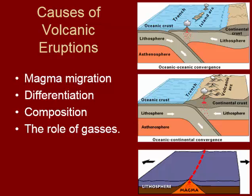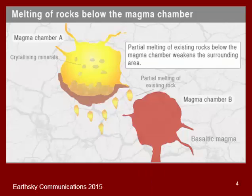Some of the ways a magma chamber's composition changes as it migrates through the crust happen for a variety of reasons. Here we have two magma chambers that started with the same composition but have been migrating slowly through surrounding country rock of a different composition. As the basaltic magma migrates, it melts the surrounding minerals and incorporates them into the magma chamber — this is partial melting of surrounding rock, which adds lower-temperature minerals and can shift a more basaltic magma to a more felsic composition.